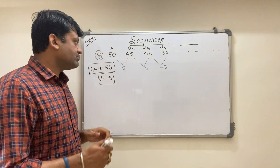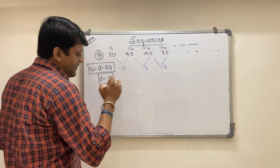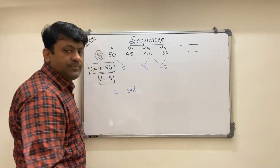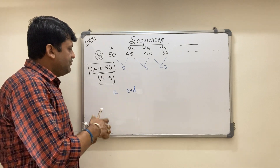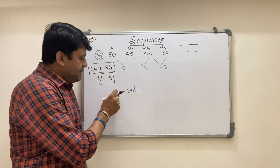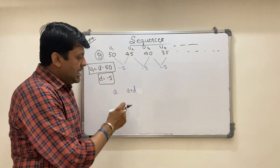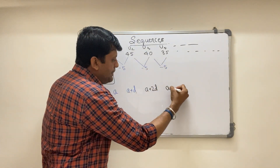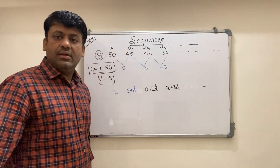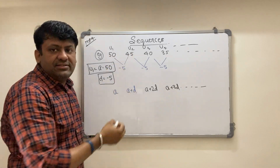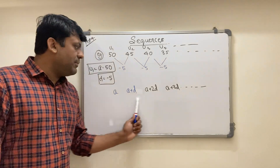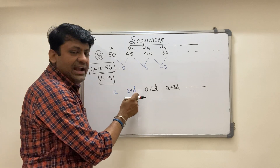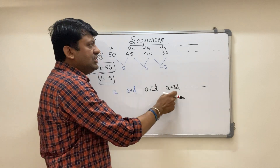Now understand: if 50 is my first term 'a', can I write 45 as a plus d? That means 50 plus (minus 5), which is 45. Every time you add the common difference to move to the right. So 40 can be written as a plus 2d, and 35 can be written as a plus 3d, and so on.